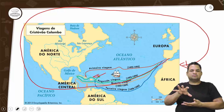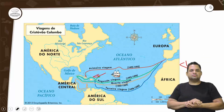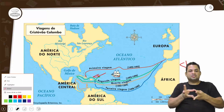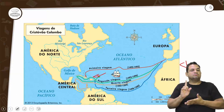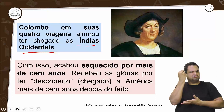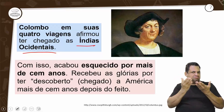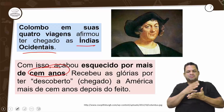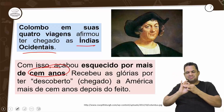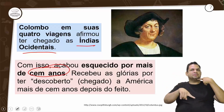Com isso, Colombo vai ser esquecido por mais de 100 anos. Recebeu a glória de ter descoberto a chegada à América mais de 100 anos depois do feito — ele já tinha morrido quando disseram que não chegou às Índias, mas sim às Américas.